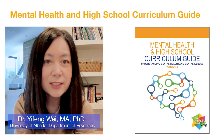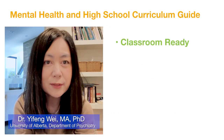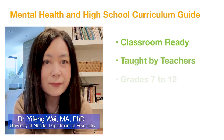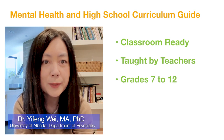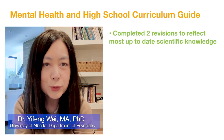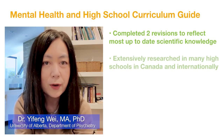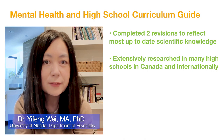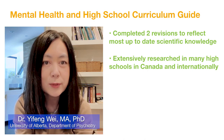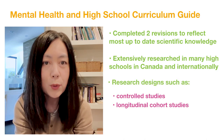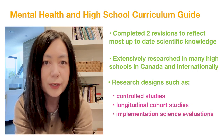The mental health and high school curriculum guide is designed to be a classroom-ready mental health literacy resource to be taught by classroom teachers in grades 7 to 12 classrooms to improve youth mental health. It has gone through two revisions to reflect the most up-to-date scientific knowledge in youth mental health. It has been extensively researched in many high schools in Canada and internationally through research designs such as controlled studies, longitudinal cohort studies, and implementation science evaluations.